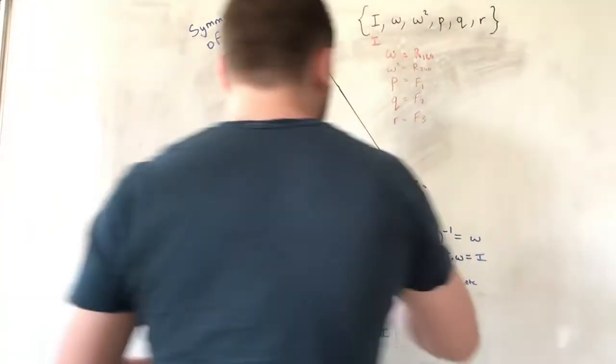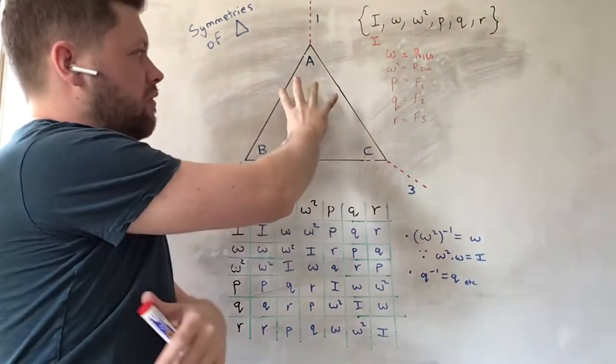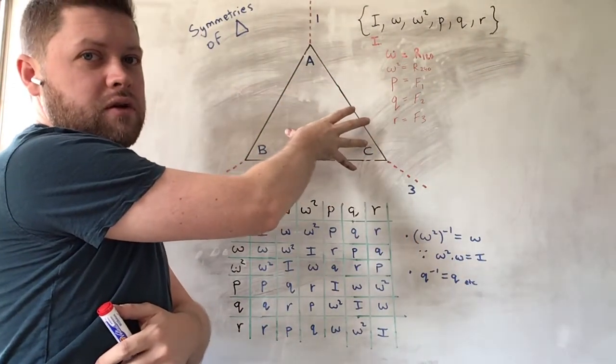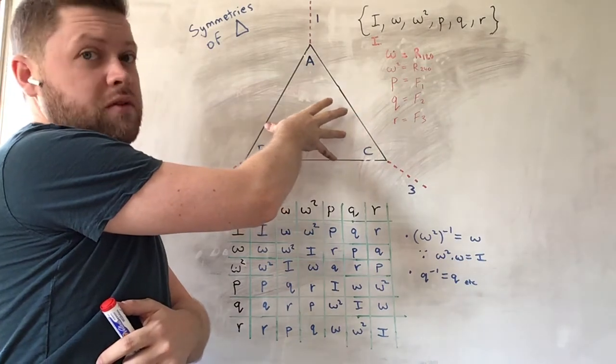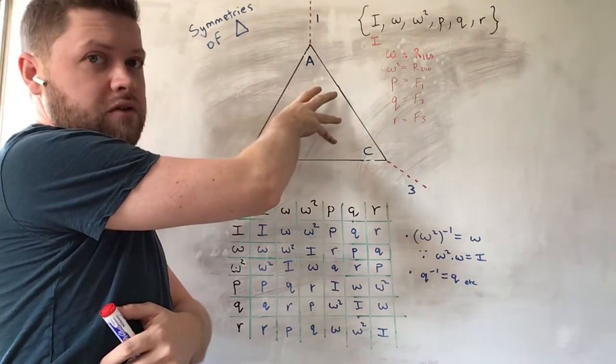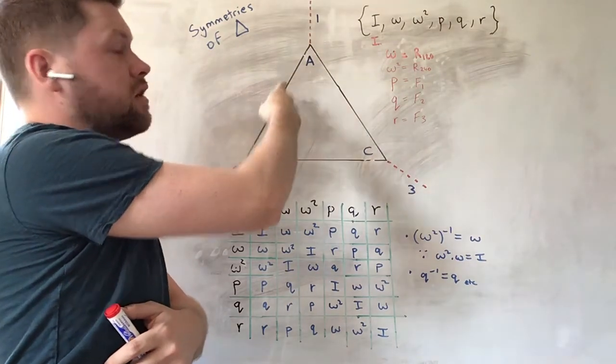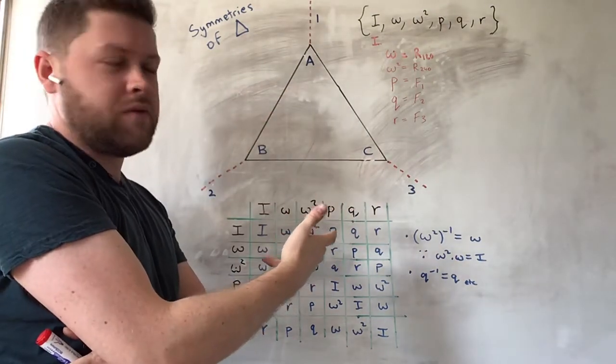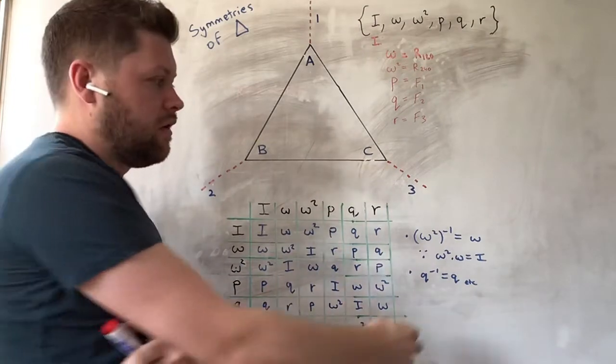For the reason that omega squared times omega is the identity. So, if you think about it like this, if you rotate, if you do omega first, you rotate by 120 degrees. Then you do omega squared, which is a rotation of 240 degrees. That gives you a full rotation back to where you started again.